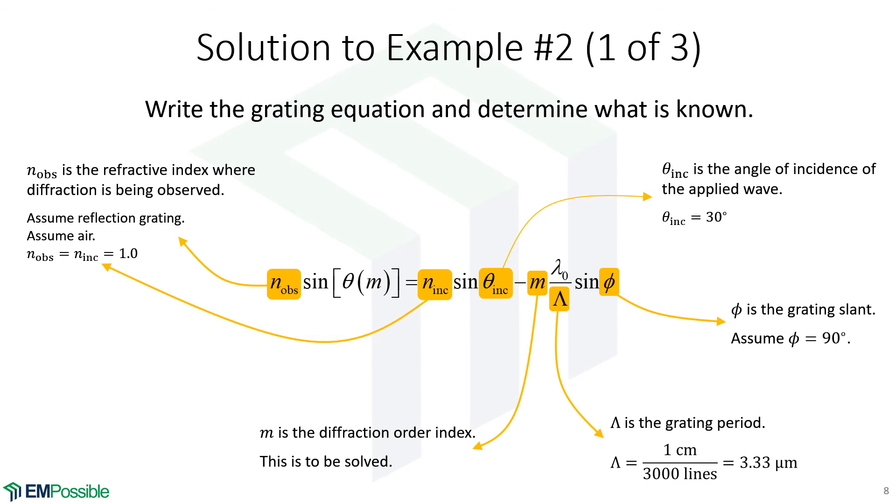The grating slant wasn't given, but for ruled gratings, we can assume that that's 90 degrees. So sine of 90 degrees will go to 1. The diffraction order. This is really what we're solving for. We're going to figure out what values of m give real valued angles so that we can figure out how many actual propagating waves we have for the diffraction orders. We're going to count those.